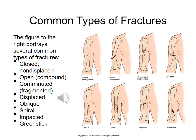Complications include infection and compartment syndrome. See the key features on page 1031 about acute compartment syndrome. This is when there is so much pressure in the compartment around the fracture that it cuts off blood circulation, potentially leading to loss of the limb. It can completely cut off the blood vessels and nerves so that the limb dies.